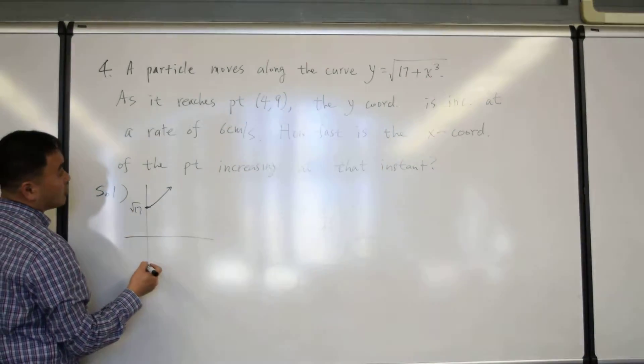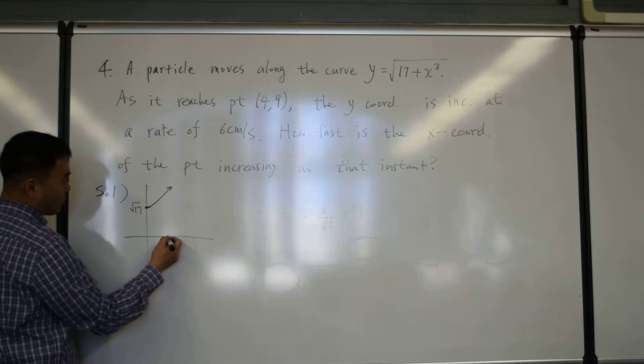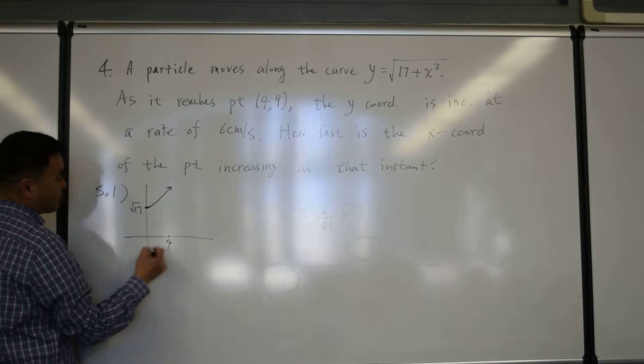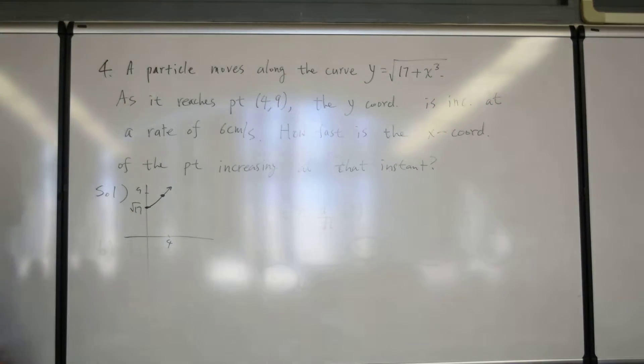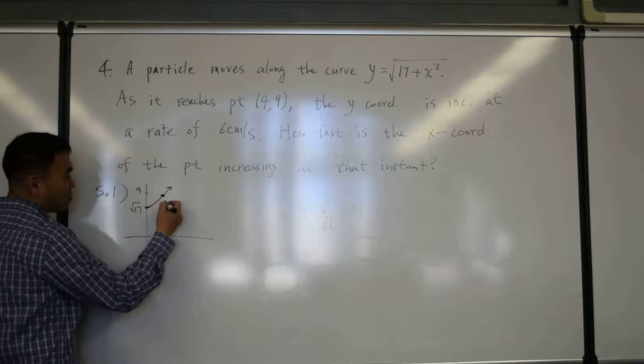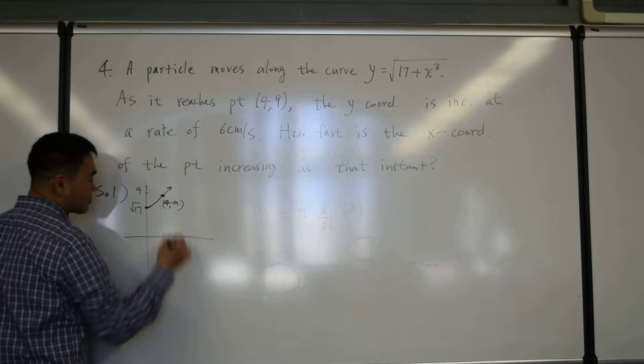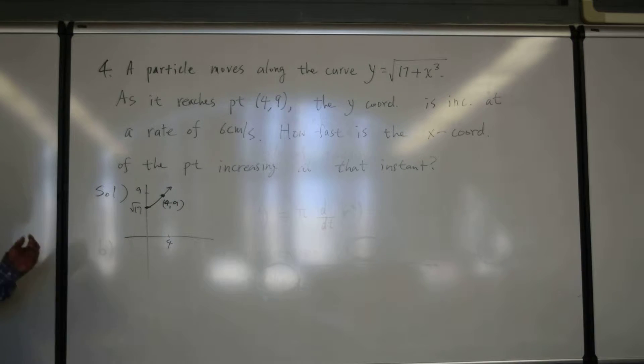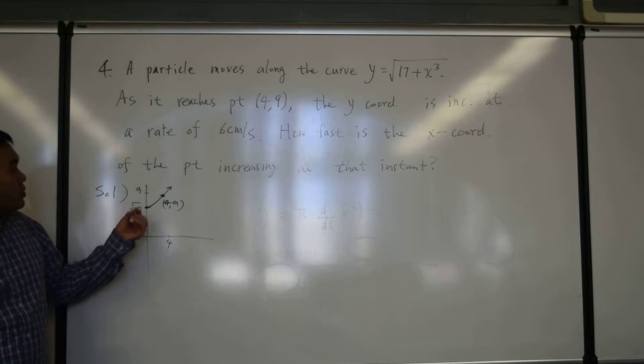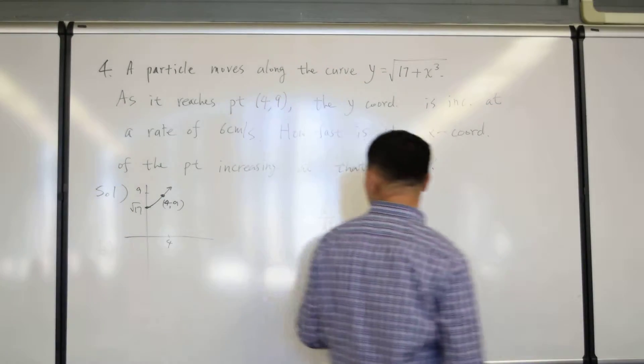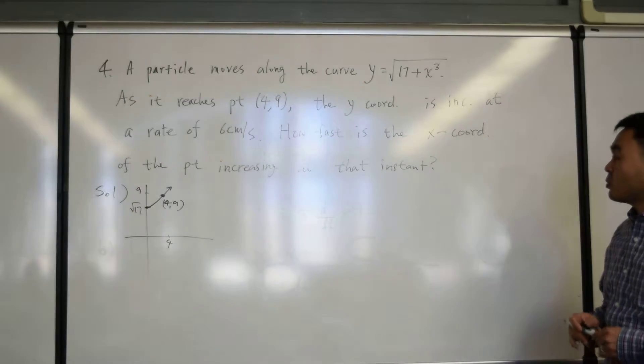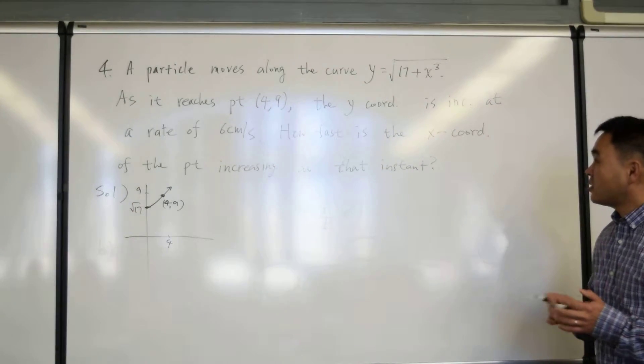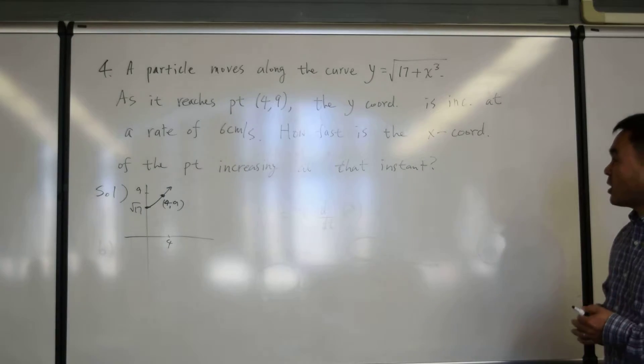And the 4,9, so let's say this is 4 and that's 9, which is actually not very drawn to scale, but let's say this point is 4,9. And at 4,9, we know that the rate of change of the y coordinate is 6 centimeters per second. And the question is how fast is the x coordinate of the point increasing at that instant?